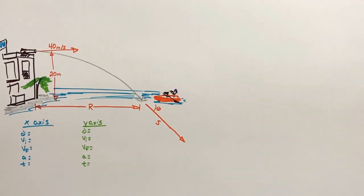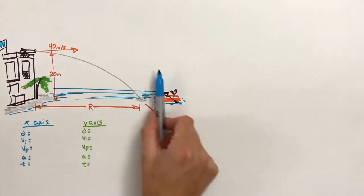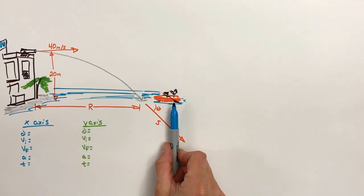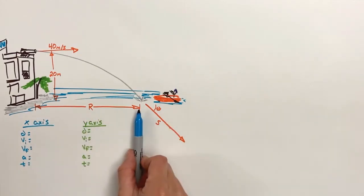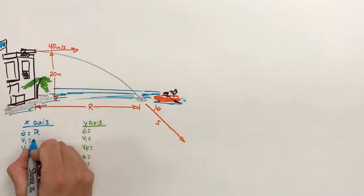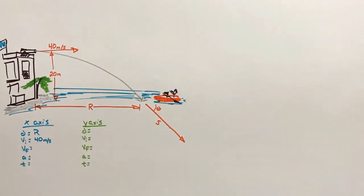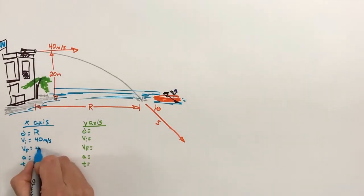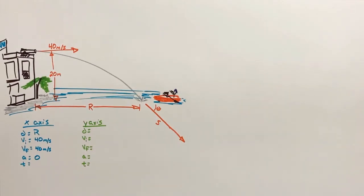So we're going to look at the motion of the cannon shell in the x-axis and independently in the y-axis. When the cannon fires the shell, the shell is initially going to move horizontally, but as it travels through the air, it's going to accelerate vertically. The horizontal displacement is what we're going to call the range of the shell. The initial horizontal velocity of the shell is 40 meters per second, and because this is projectile motion, there's no acceleration in the x-axis. Consequently, the final velocity is also going to be 40 meters per second. However, we don't know enough information in the x-axis to solve for the range directly — we're going to need to find the time first.